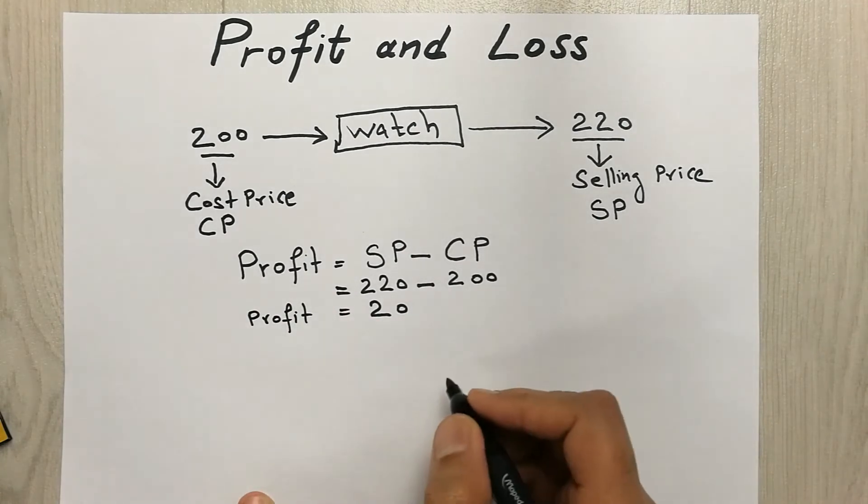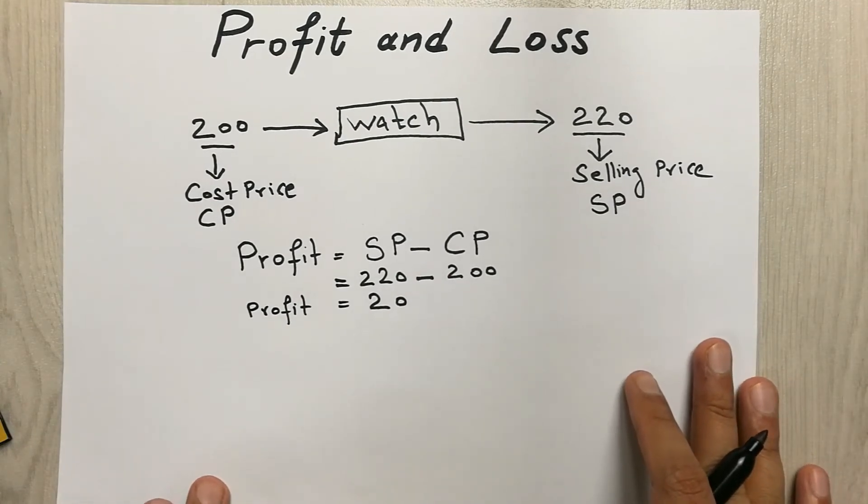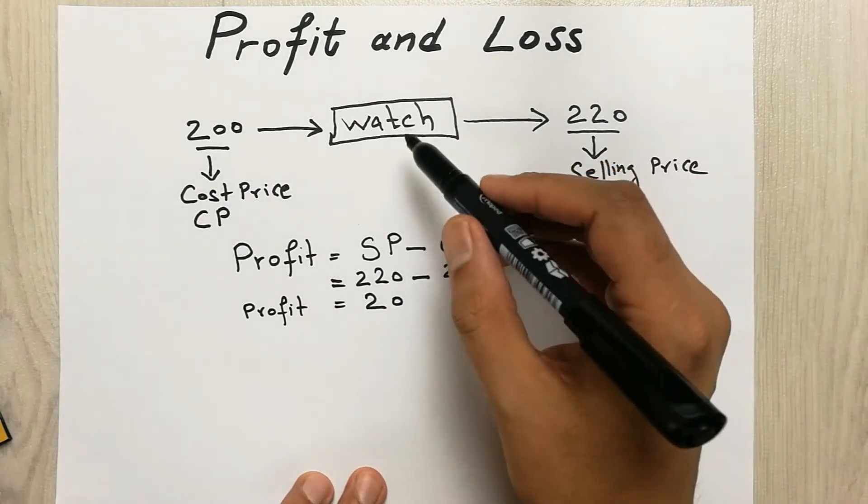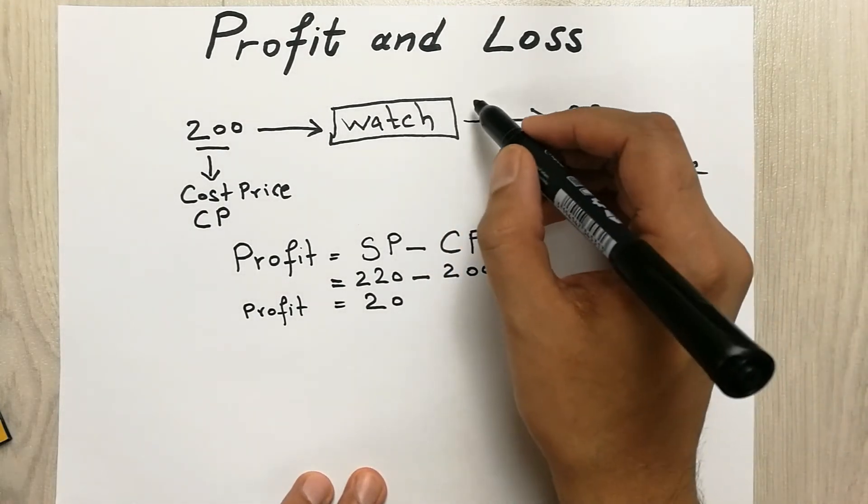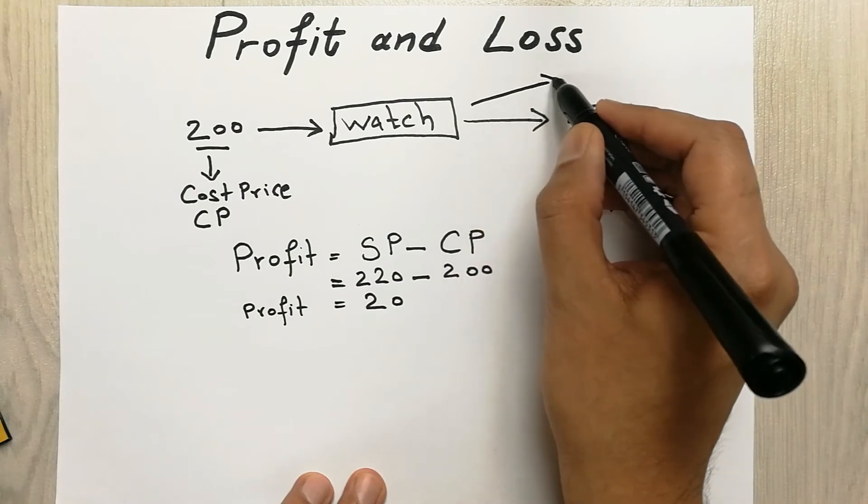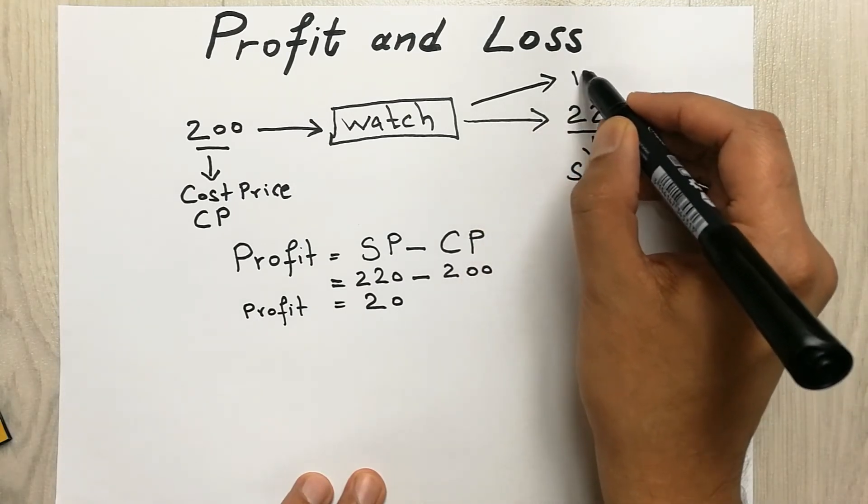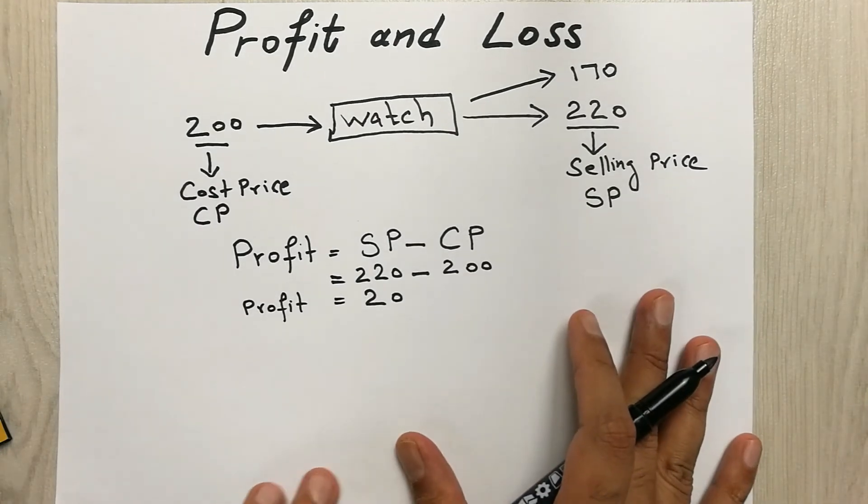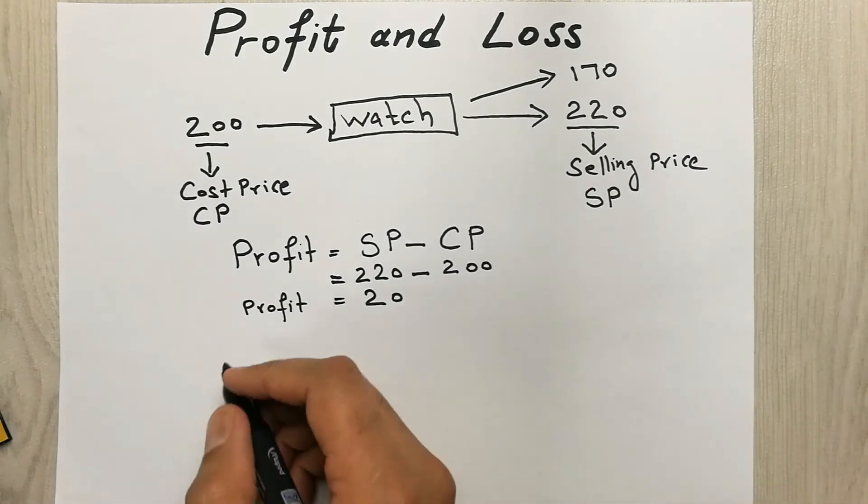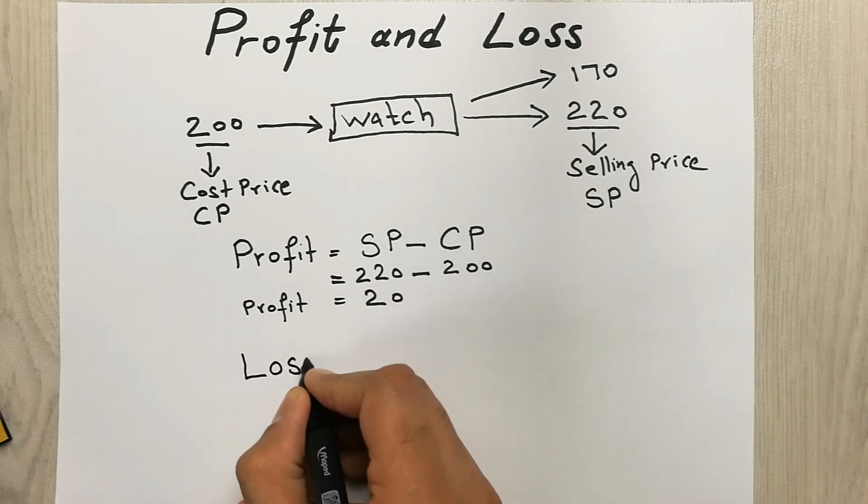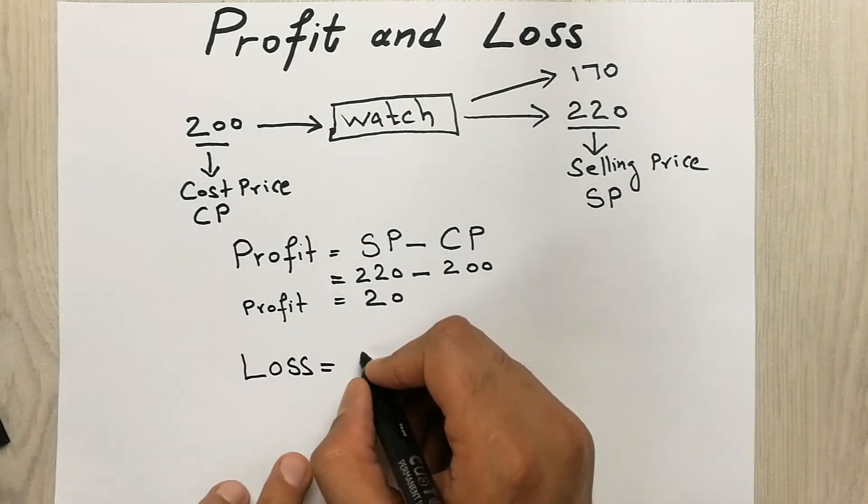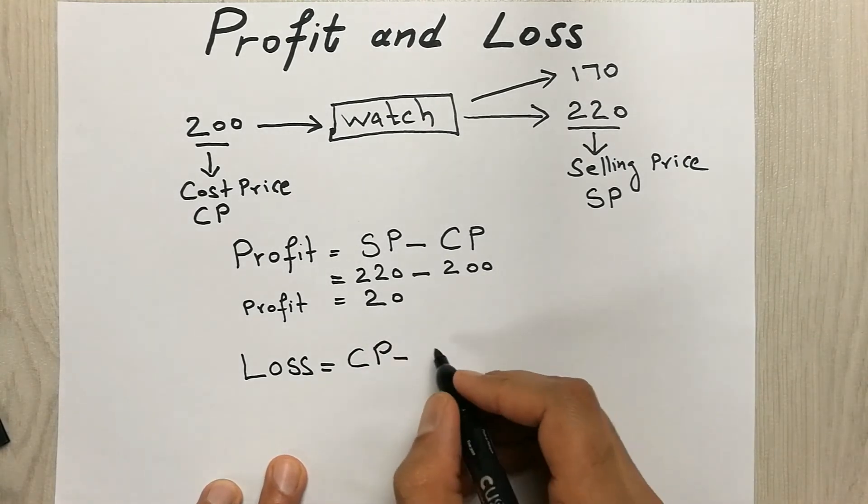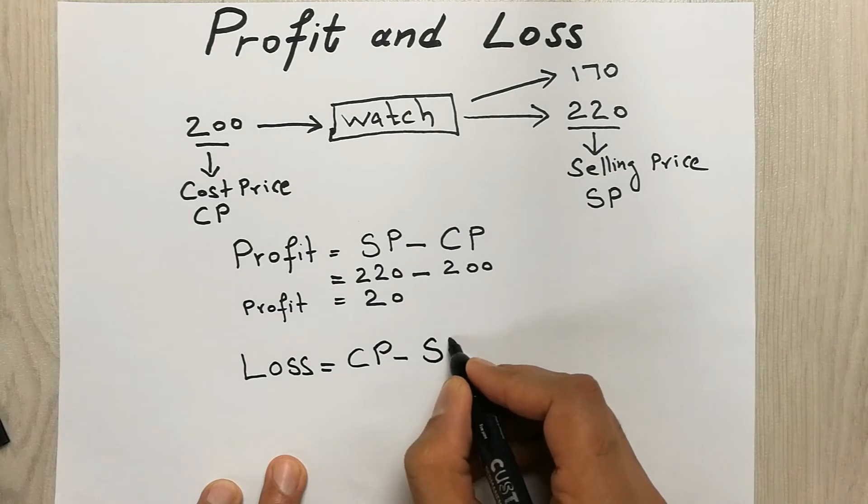So now we're going to find out the loss. So guys, let's say you sell this watch instead of 220, you sell this watch at 170. So now we will put the formula for the loss. Loss equals to cost price minus selling price.